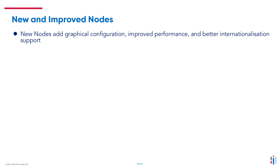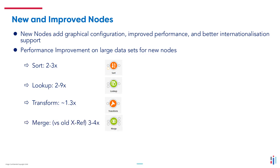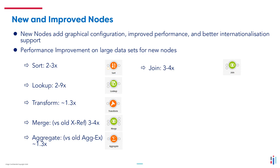Data360 Analyze has new nodes which add graphical configuration, improved performance, and better internationalization support. There are performance improvements on large datasets for new nodes: the sort node is 2-3 times faster; the lookup node is 2-9 times faster; the transform node is approximately 1.3 times faster; the merge node is 3-4 times faster than the old XRef node in LAE; the join node is 3-4 times faster; the tail node is approximately 10 times faster; and the CSV delimited input node is 2-5 times faster.